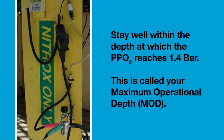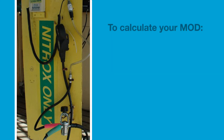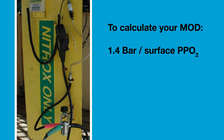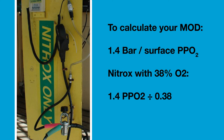This is called your maximum operational depth. To calculate your maximum operational depth, divide 1.4 bar by the surface partial pressure of the oxygen in your nitrox mix. For example, if you are using enriched air nitrox 38 — that's nitrox with 38% oxygen — you divide 1.4 by 0.38 and that gives you 3.7 bar. The pressure is 3.7 bar at 27 meters, so 27 meters will be your maximum operational depth when using enriched air nitrox 38.